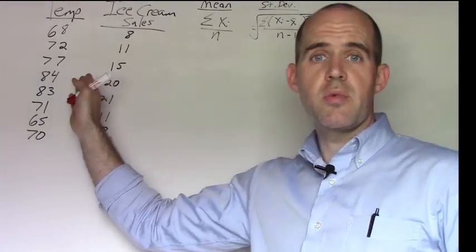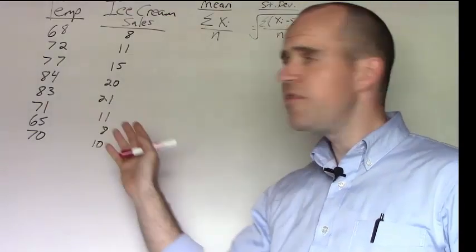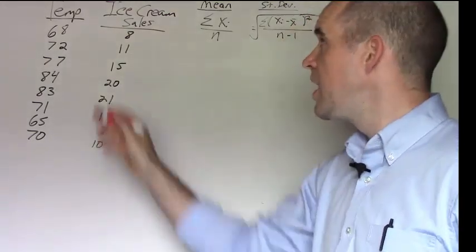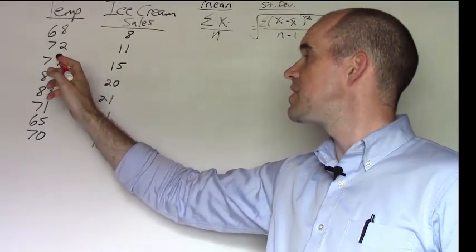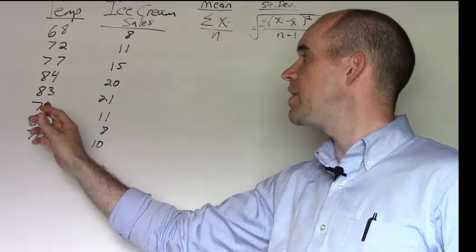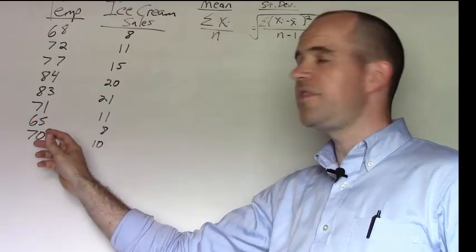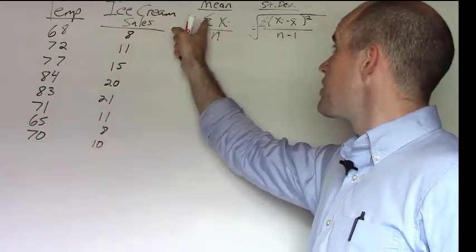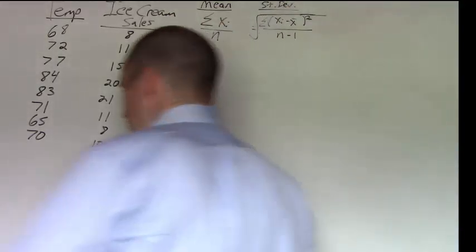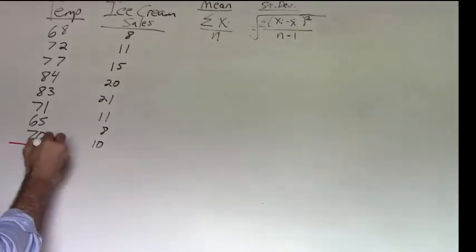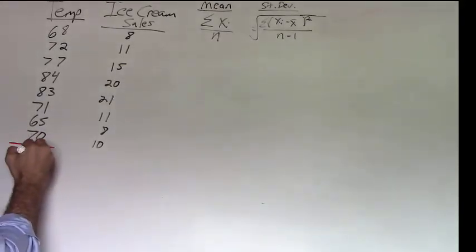So let's go ahead and start with the temperature. If I wanted to find the mean of the temperature, I'm simply adding up 68, 72, 77, 84, 83, 71, 65 and 70. So the sum of the index of x values. And if I add that up, that actually equals 588.